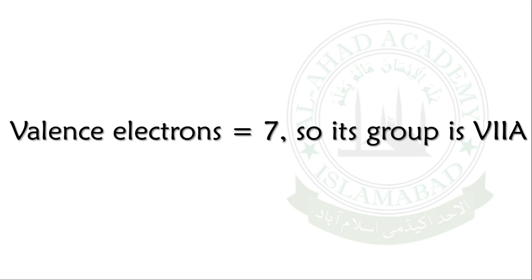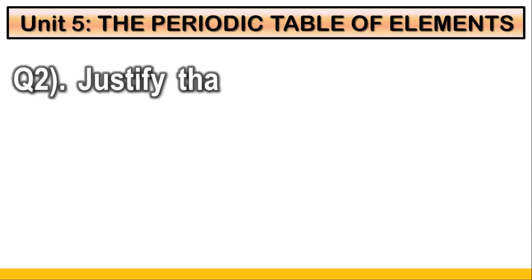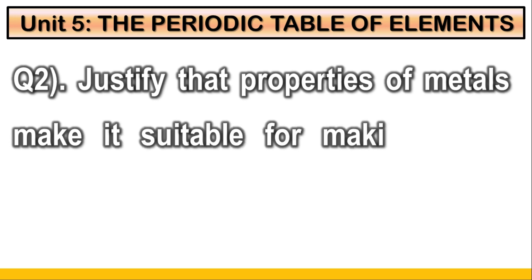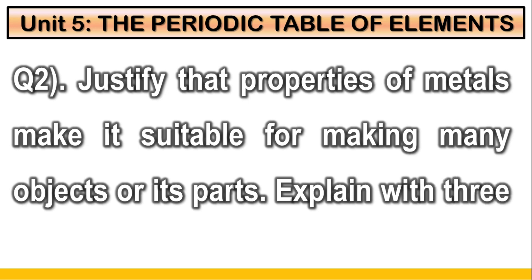So Fluorine is in group number 7 and with 2 total shells, Fluorine is in period number 2. Question number 2: Justify that properties of metals make it suitable for making many objects or its parts. Explain with 3 examples.